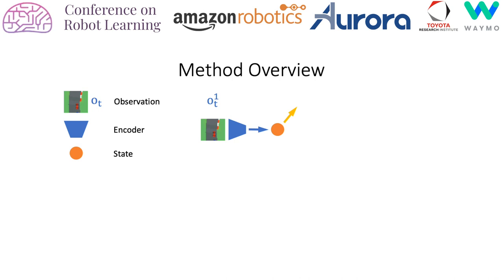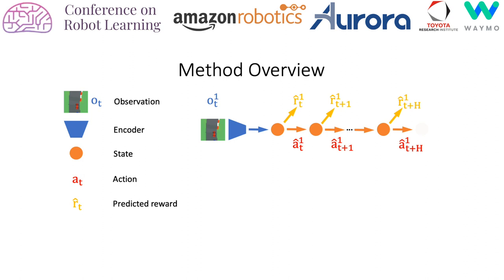In our method, high-dimensional pixel input is encoded into a latent embedding. This latent embedding is used for learning a policy, one-step rewards, and a value function.